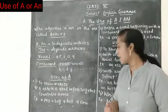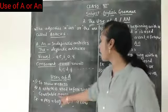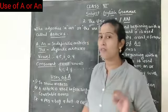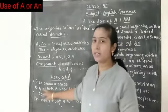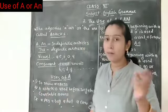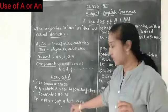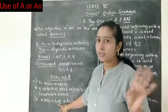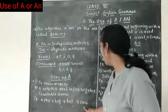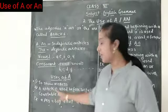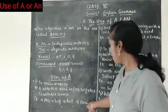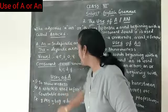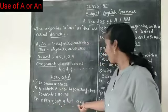The second rule is: A is used before a singular countable noun. A singular noun means one — something you can count: one, two, three, four, five. For example: a pen, a boy, a heart, a cow. We can count them — one pen, two pen, three pen; one boy, two boy, three boy. All these are singular countable nouns, so before them we use A.